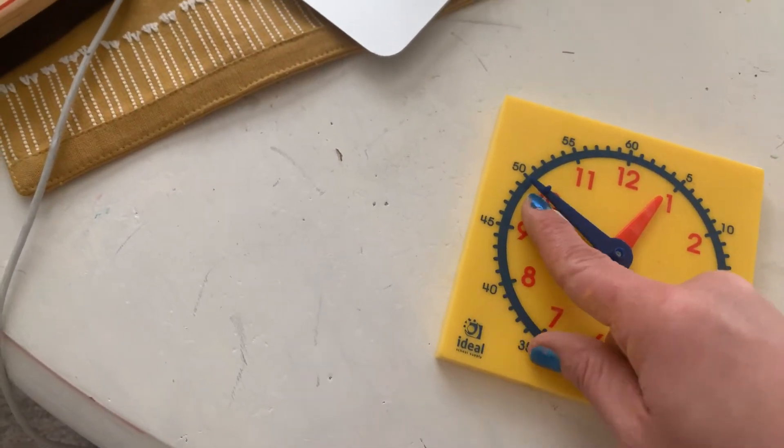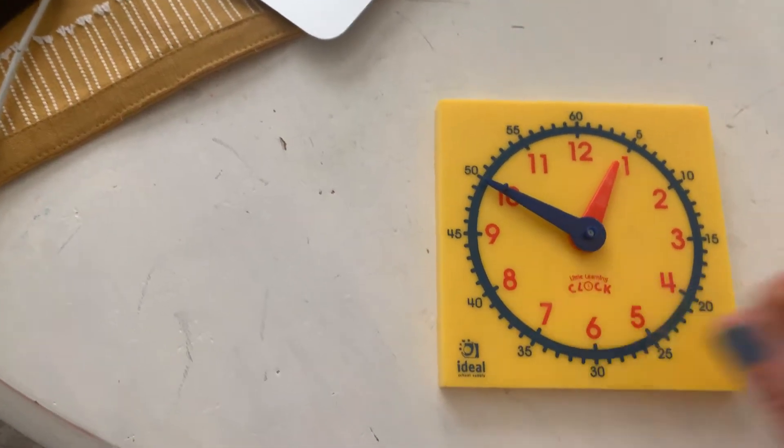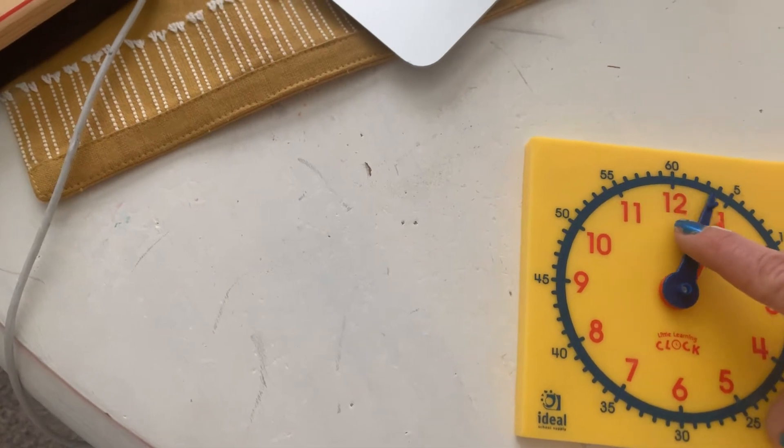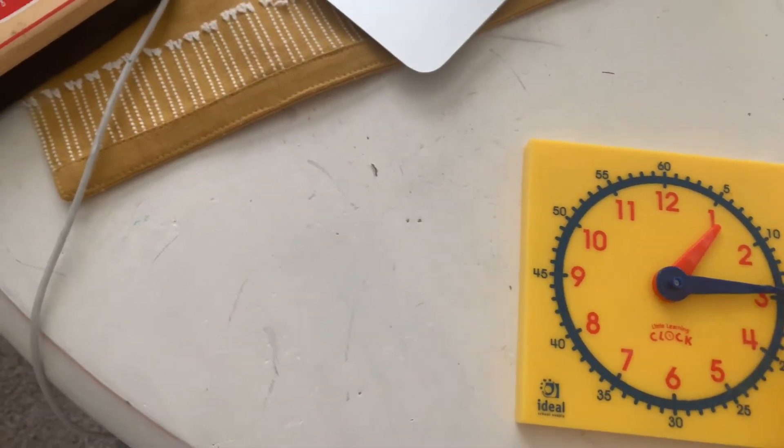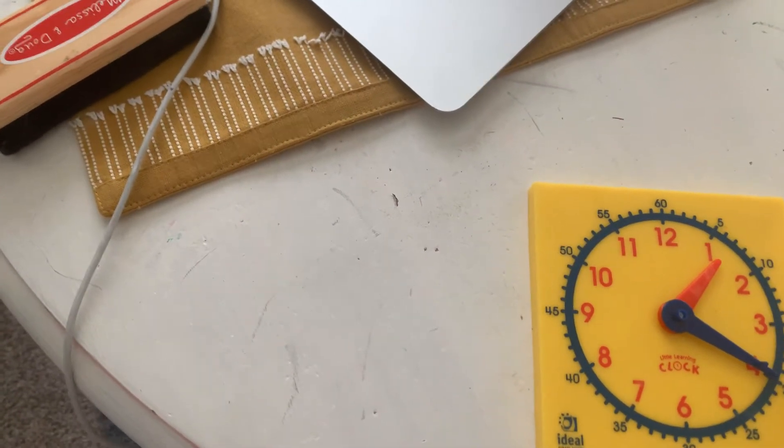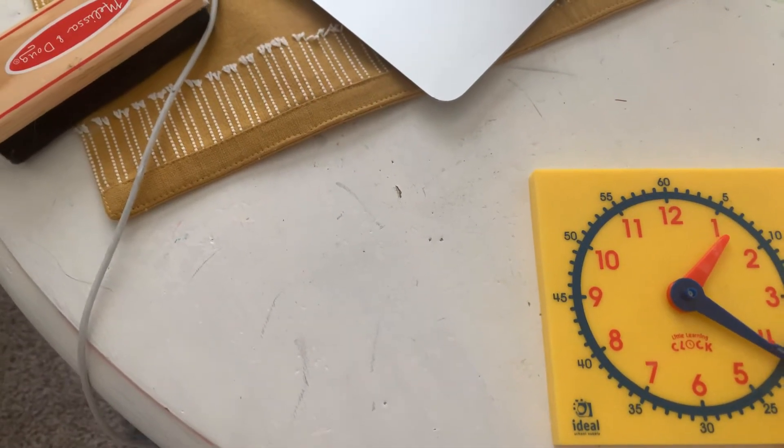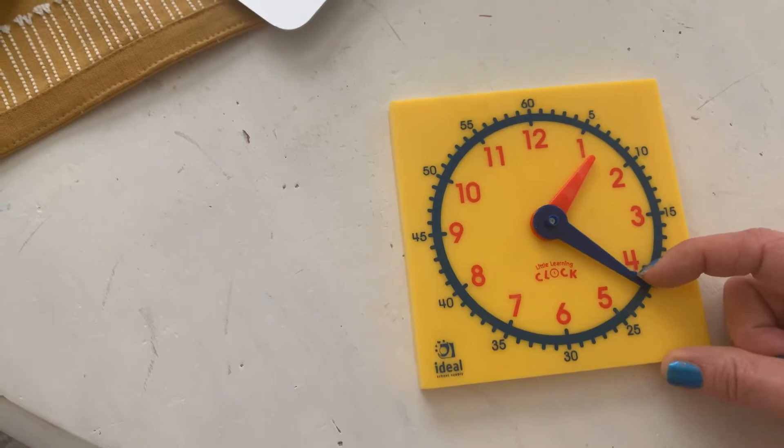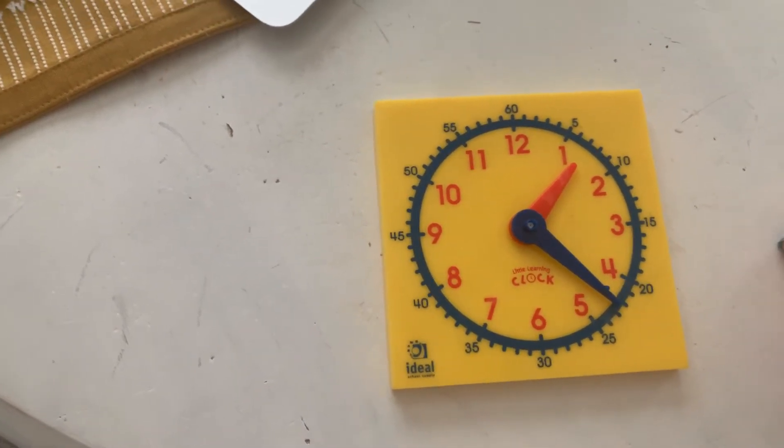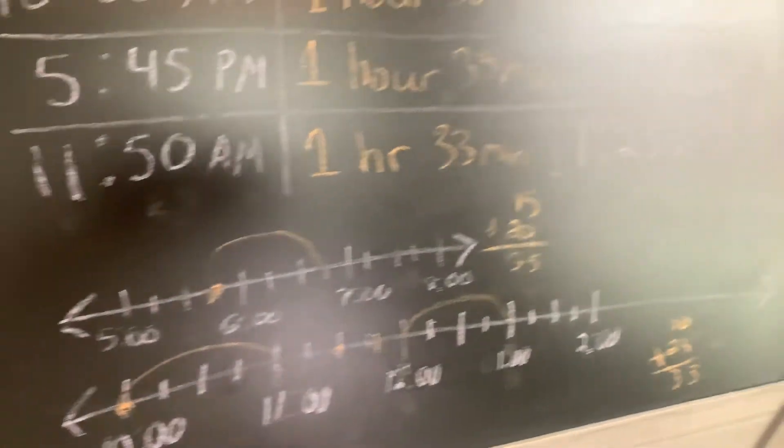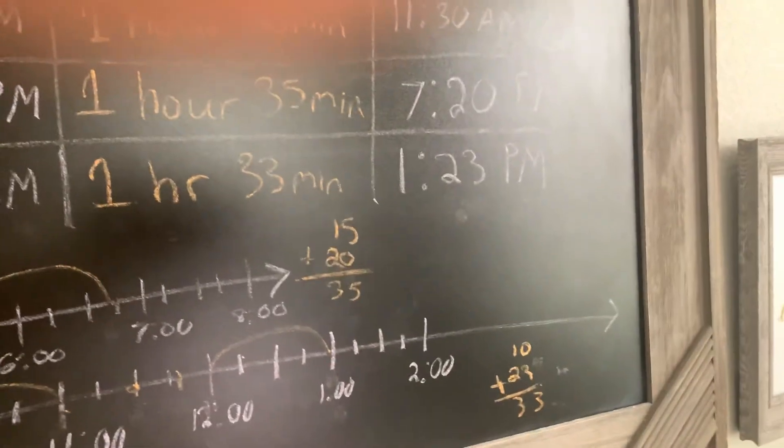That's one hour. 11:50 to 12:50 is one hour. One hour, 5, 10, 15, 20, 25, 30. That's one hour, 30 minutes. And I have to get to 23, 31, 32, 33, one hour, 33 minutes. And I'm at 1:23. And that's what we said. One hour, 33 minutes to end at 1:23.